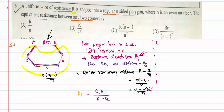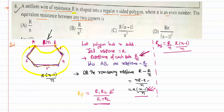The effective resistance between any two corners of the polygon is the parallel combination of r1 = r/n and r2 = r(n−1)/n. Applying the formula: numerator is (r/n) × r(n−1)/n = r²(n−1)/n², and the denominator is r/n + r(n−1)/n.